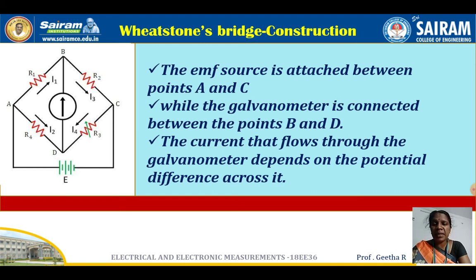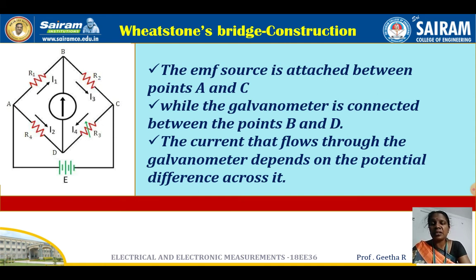An important point: the Wheatstone bridge works on the principle of null deflection. The galvanometer shows zero deflection, meaning zero current flows through it, when the potential difference between points B and D is zero — that is, when B and D are maintained at the same potential, there will be no current and no deflection.